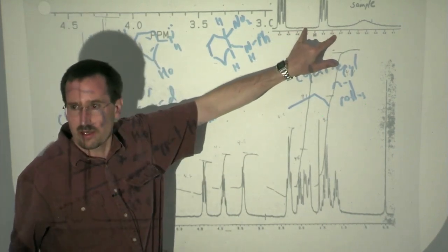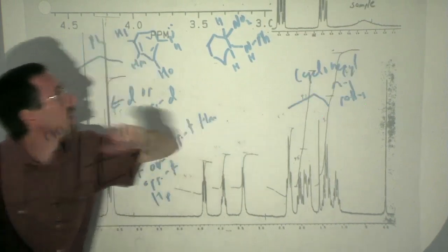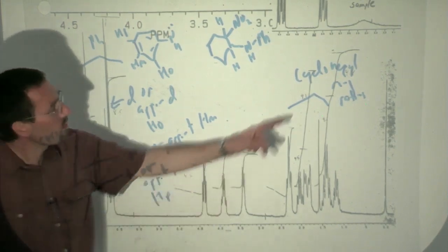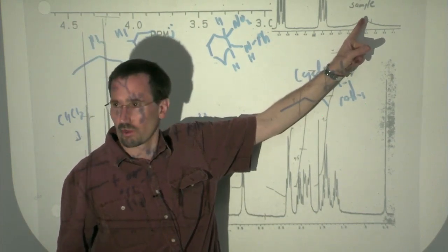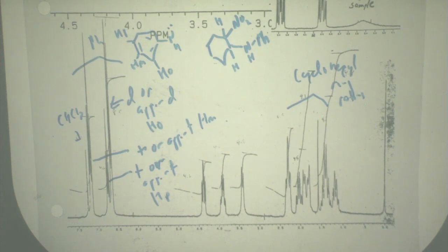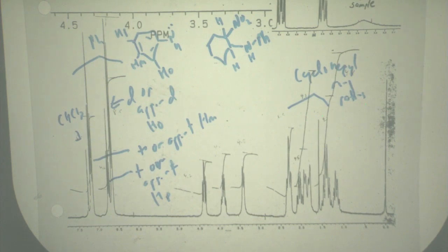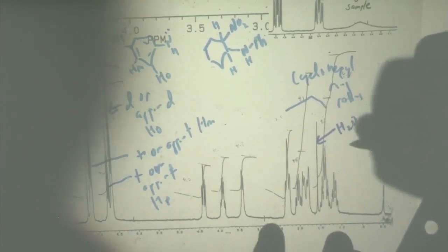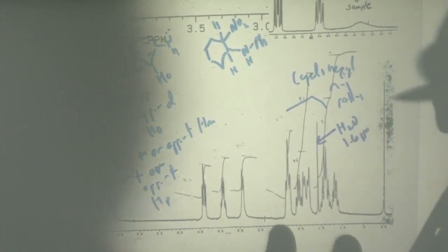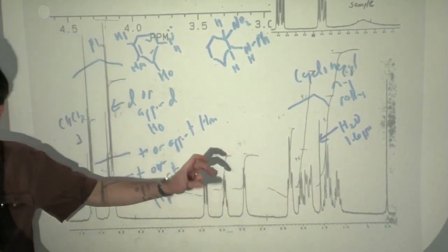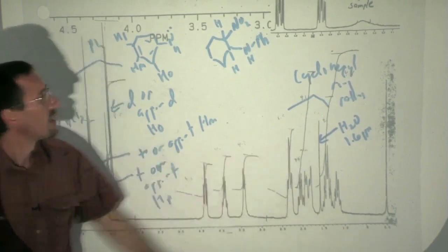Something very interesting happened with this sample: a day later when I reran it, the midfield region looked different. This is the day-old sample versus the freshly prepared sample. The nitrogen proton has exchanged with deuterium—we still see it but now it's broad. The peak at 1.56 ppm is H2O, very typical for water in chloroform at about 10–20 millimolar. Chloroform can generate HCl, and even a little bit catalyzes the exchange of NH protons between molecules or between molecules and water.